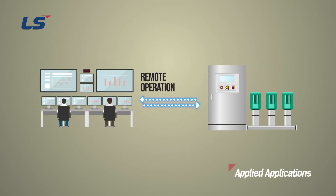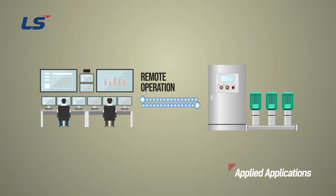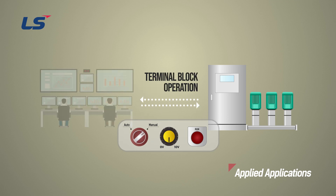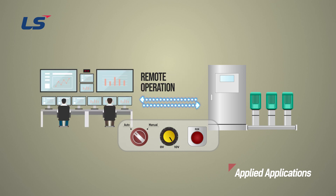This function can be applied when you want to directly operate the inverter in local control. By operating the switch connected to the inverter on the outside of the panel, the remote command is disabled and the inverter can be operated by the use of terminal block or keypad. The original operation method can be resumed by using the remote operation switch on the panel.